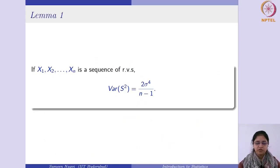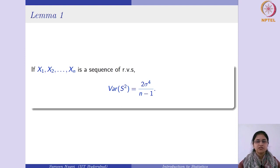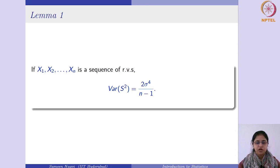The third situation is when the population variances are unknown and unequal, so sigma 1 square is not equal to sigma 2 square, but both are unknown. Before going into that, we need to see two lemmas which would be helpful in finding out and proving the results later on.